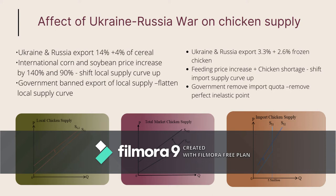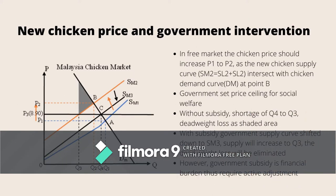The government also tried to increase chicken supply by removing the import chicken quota. However, Ukraine and Russia are also exporters of frozen chicken. The war caused scarcity in both chicken and its breeds, shifting the import supply curve from SL1 to SL2. The changes in local and import chicken supply curves shifted the market supply curve from SM1 to SM2. In the free market, chicken price should increase from P1 to P2 as the new equilibrium formed by SM2 and demand curve DM.